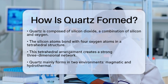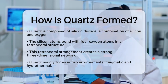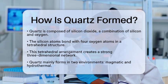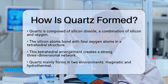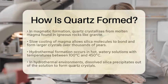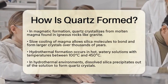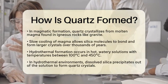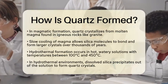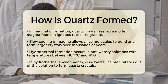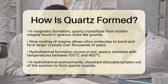Quartz forms mainly in two environments: magmatic and hydrothermal. In magmatic formation, quartz crystallizes from molten magma. This typically happens in igneous rocks like granite. When magma cools slowly, the silica molecules have time to bond together and form crystals. This process can take thousands of years, allowing for the development of larger quartz crystals.